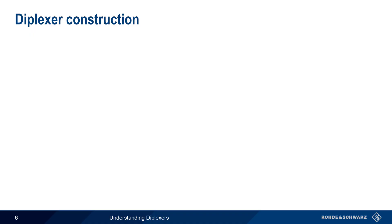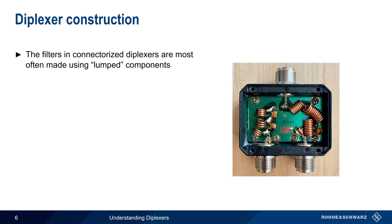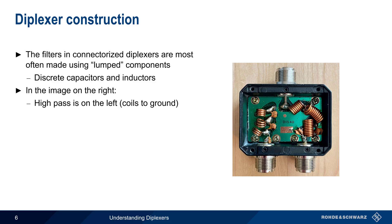Let's now take a look inside of a diplexor. The low and high-pass filters in connectorized diplexors are most often constructed using so-called lumped components, that is discrete capacitors and inductors. In the image on the right, we can see the high-pass path on the left, with capacitors in series, and inductor coils connected to ground. The low-pass path on the right has inductor coils in series, and the capacitors connected to ground.